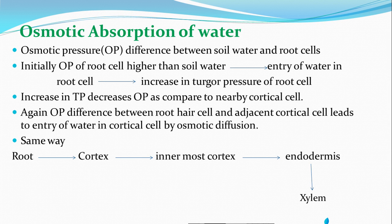The root cell has more osmotic pressure compared to soil water. This means that the concentration of cell sap is more compared to soil water. In this condition, there is a process of endosmosis, meaning water molecules enter within the root cell, leading to an increase in turgor pressure of the root cell.